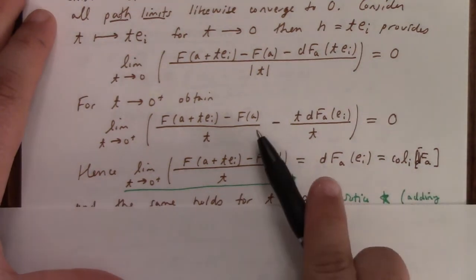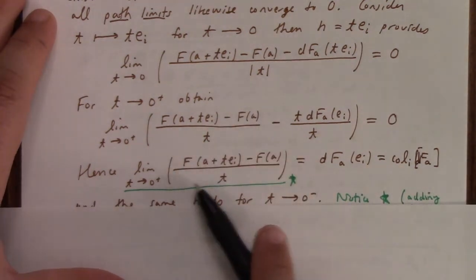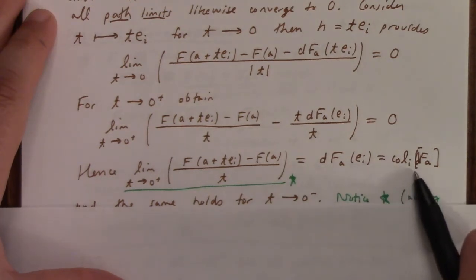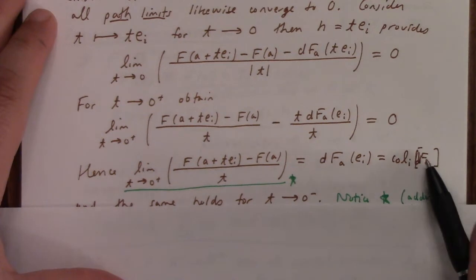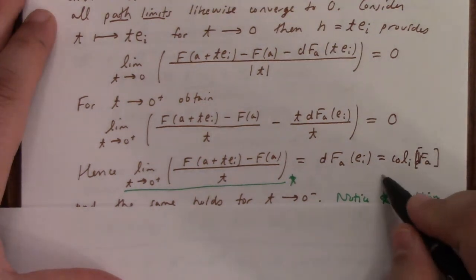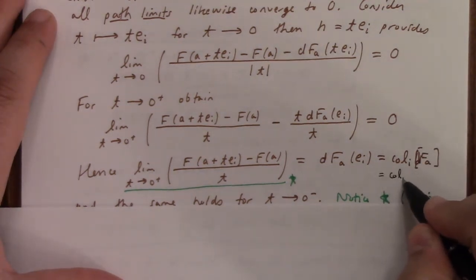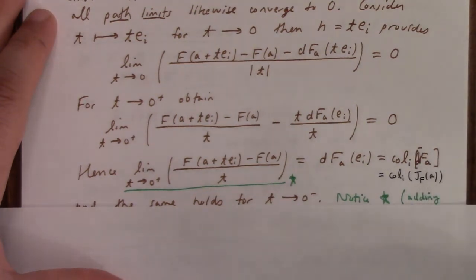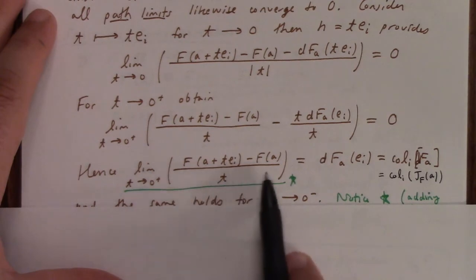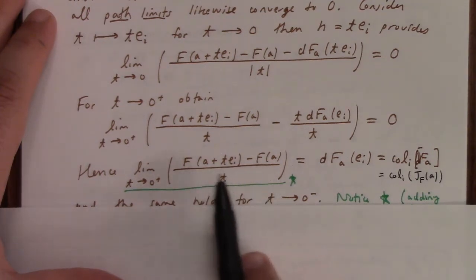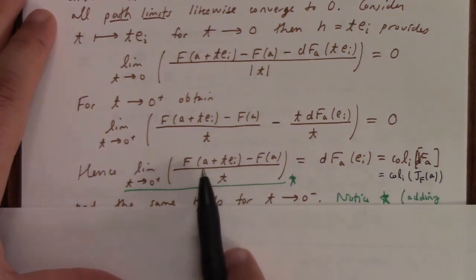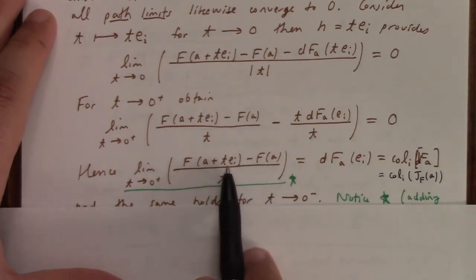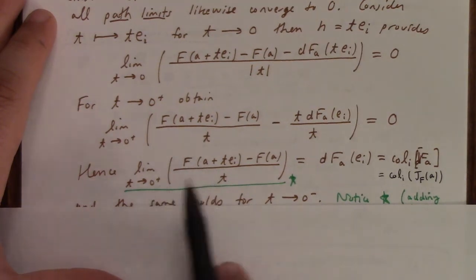And it follows, then, that the limit of this difference quotient is equal to dF_a(e_i), which is exactly the i-th column of the standard matrix. In other words, this is the i-th column of the Jacobian matrix of F at a, right? But this is nothing more than the partial derivative of F with respect to the i-th coordinate, because what you're doing with this formula is you're freezing all the coordinates except for the i-th one where you're varying it, all right?